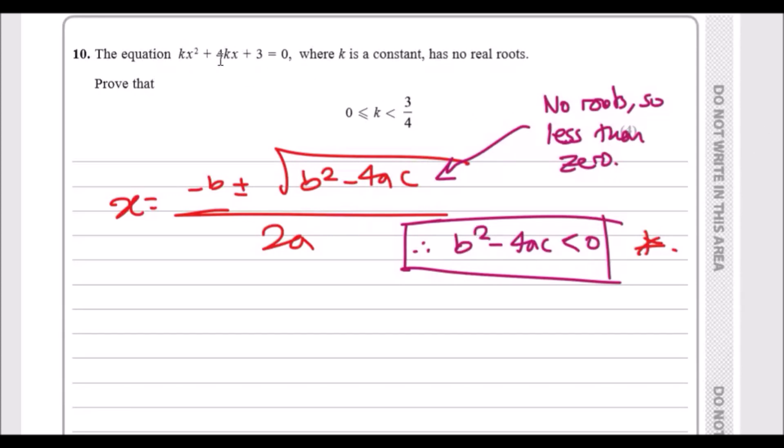So b is obviously 4k, so we can say therefore we've got 4k squared minus 4ac - so 4 times a which is k times c which is 3 - and all of this is less than zero.